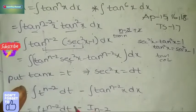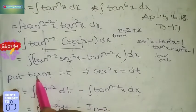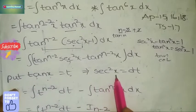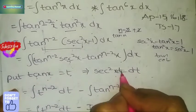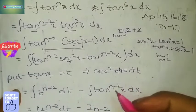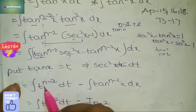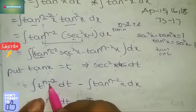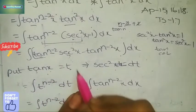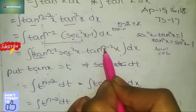Now let t = tan x. Differentiating, the differentiation of tan x is sec² x, so sec² x dx = dt. The integral becomes: integral of t^(n-2) dt minus integral of tan^(n-2) x dx.